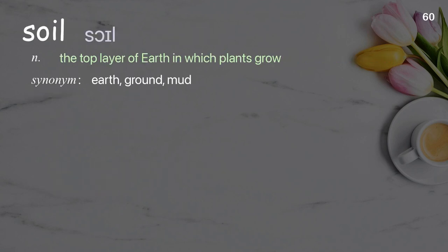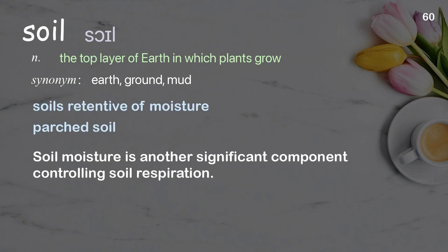Soil: the top layer of earth in which plants grow. Examples: soils retentive of moisture, parched soil. Soil moisture is another significant component controlling soil respiration.